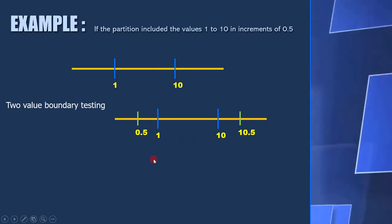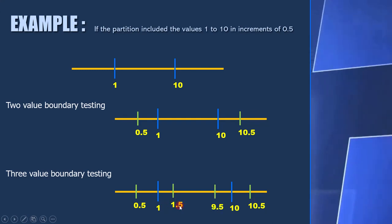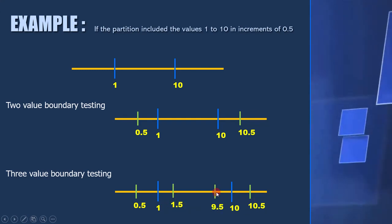Now let's move to the three-value boundary testing. Here the outside value is 0.5 and inside value is 1.5. And here the outside value is 10.5 and inside value is 9.5.